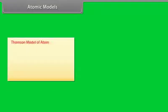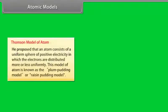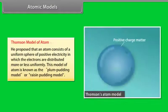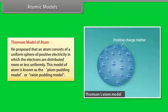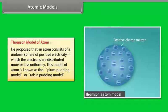Atomic models: Thomson's model of the atom proposed that an atom consists of a uniform sphere of positive electricity in which electrons are distributed more or less uniformly. This model is known as the plum pudding model or raisin pudding model.